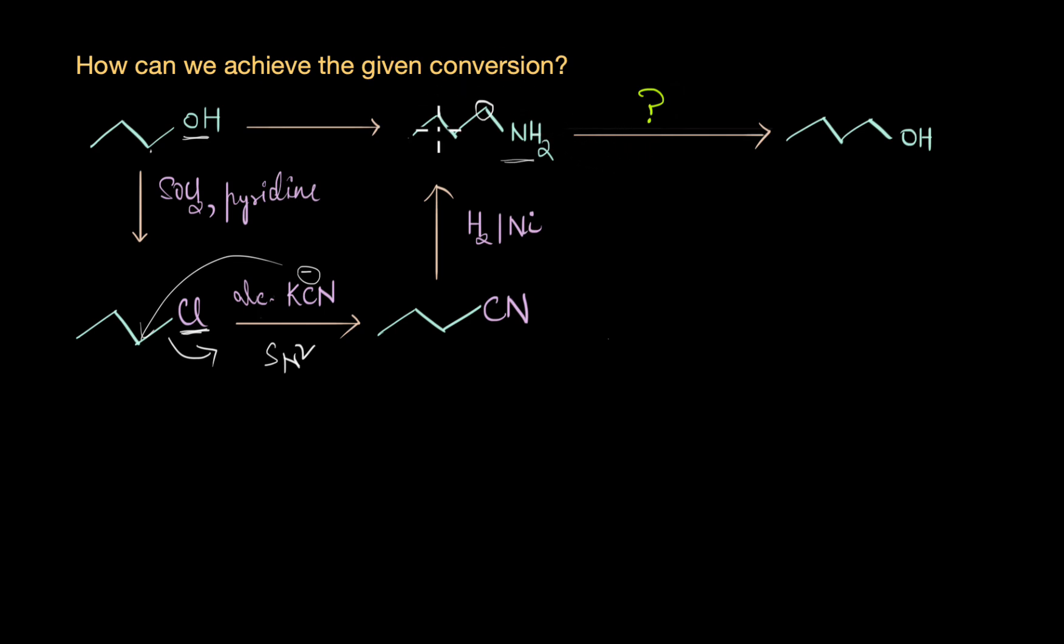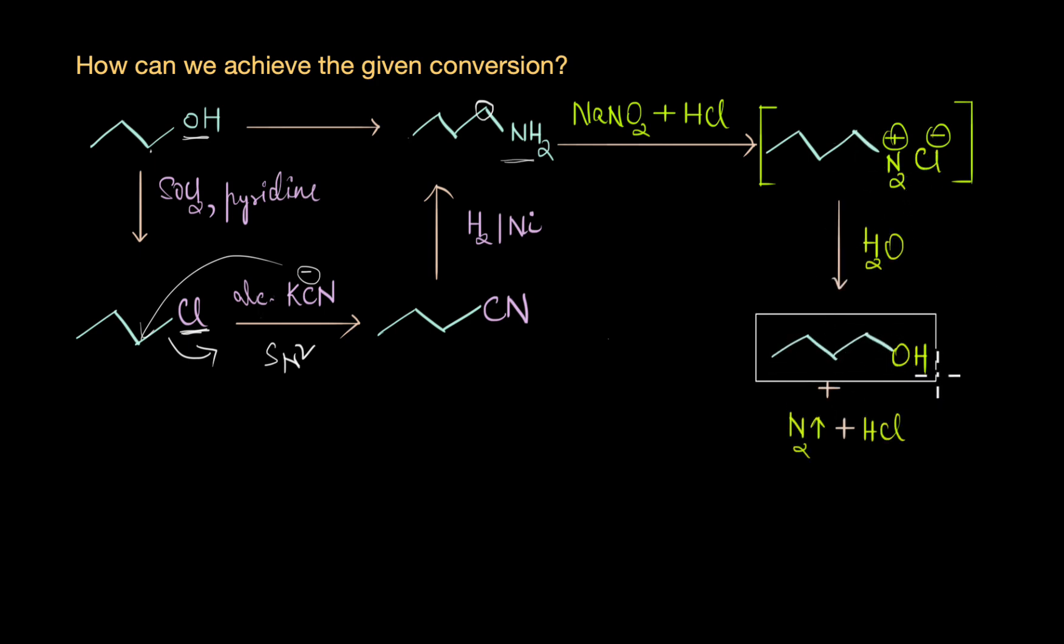Can you think of any reaction that you've discussed in this chapter that can help us achieve this conversion? How about converting our amine to the corresponding diazonium salt by treating our amine with NaNO2 and HCl, basically HNO2. We can convert our amine to the corresponding aliphatic diazonium salt, and we know this is highly unstable, so it would immediately decompose and give us the corresponding alcohol along with effervescence, along with the evolution of nitrogen gas. In fact, this is a classic test to identify if a sample contains a primary amine, more specifically primary aliphatic amine. This primary aliphatic amine can undergo diazotization to give us the corresponding alcohol along with the evolution of nitrogen gas.